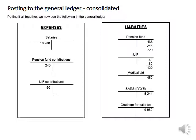The liabilities: we owe money to the pension fund, both from the deduction and the contribution. We owe money to the UIF, both from the deduction and the contribution. The medical aid. And then creditors for salaries is the net salary.